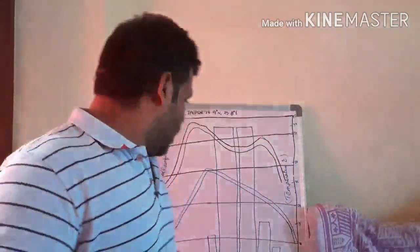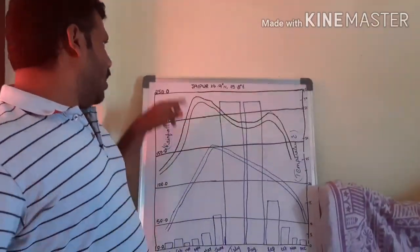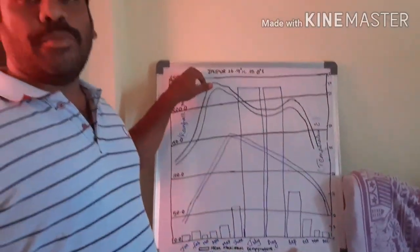What does the climatograph or climograph show for us? It shows maximum and minimum temperature and rainfall for a given place. Now we will see an example of the climatograph and how it looks.